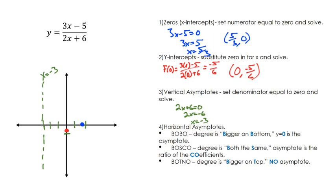Now lastly, let's do our horizontal asymptotes. This is going to be a Bosco. And the reason it's Bosco is we're not looking at the coefficients. The coefficients are different. We're looking at the exponents. That's a first degree, and that's a first degree. Therefore, our exponents are both the same. Therefore, the horizontal asymptote is the ratio of the coefficients. Those coefficients up here are 3 and 2. That would mean that our horizontal asymptote is y equals 3 halves.